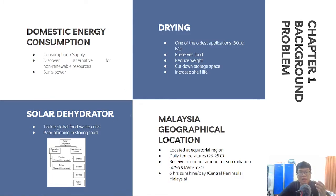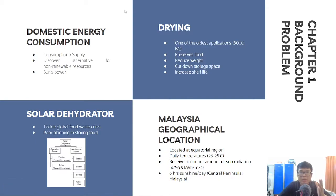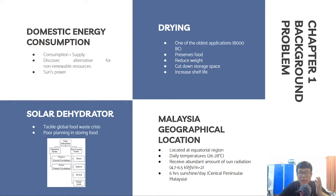Solar dehydrators can be categorized into two major groups: active and passive, while the heat transfer mode can be categorized into four types: direct, indirect, hybrid, and mixed mode. Malaysia seems suitable to promote the usage of solar dehydrators. Being a country located in equatorial regions with daily temperatures of 26 to 28 degrees Celsius, these favorable geographical positions enable Malaysia to receive an abundant amount of solar radiation. Central Peninsular Malaysia averagely receives six hours of sunshine per day.